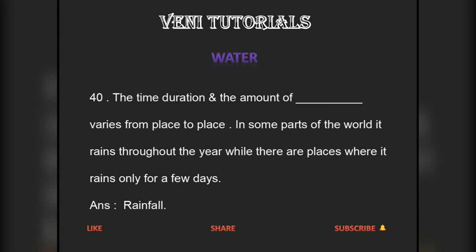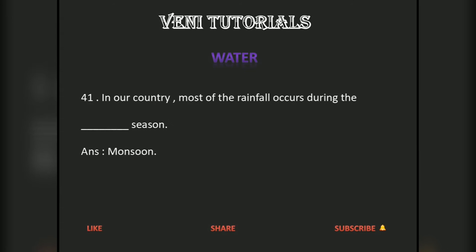The time duration and the amount of rainfall varies from place to place. In some parts of the world, it rains throughout the year, while there are places where it rains only for a few days. In our country, most of the rainfall occurs during the monsoon season.